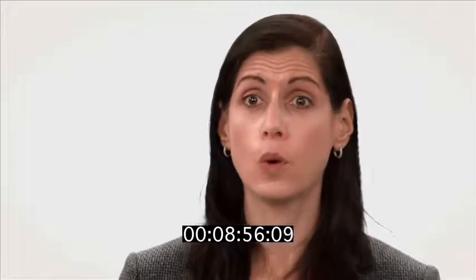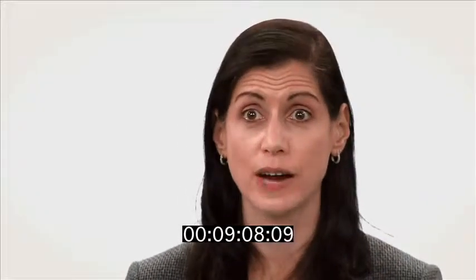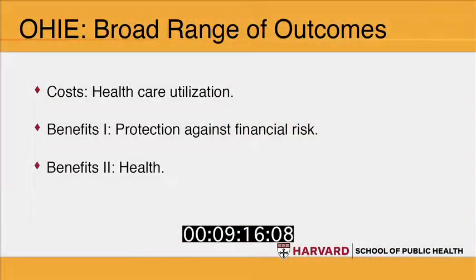This is an example of states' options under the Medicaid program. States have choices about eligibility and program parameters. Only about half of states before the ACA chose to cover low-income adults without disabling conditions in their Medicaid program. Oregon had been one of those states, but it had closed the program to new enrollment because of budget constraints. States have that choice, and Oregon chose to expand again in 2008 based on increased resources.